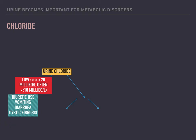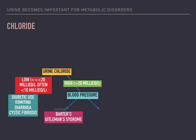If the urine chloride is high, meaning above 20 milliequivalents, you look at the patient's blood pressure. If they're normotensive, that means Bartter's or Gitelman's syndrome could be causing the metabolic alkalosis. If the blood pressure is elevated, a very prominent cause could be hyperaldosteronism. I remember to check urine chloride by spelling metabolic alkalosis with the 'CL' in it, which helps me remember this analysis.